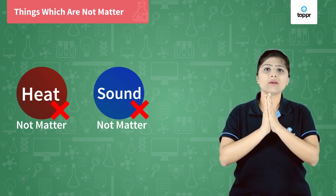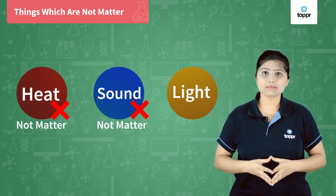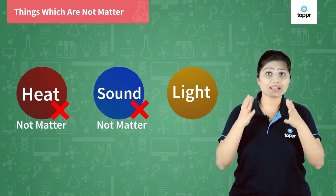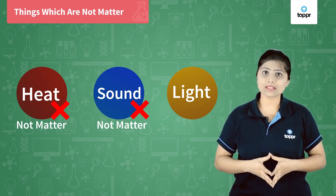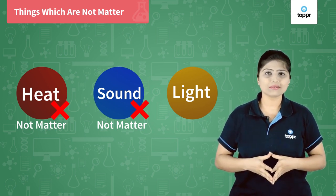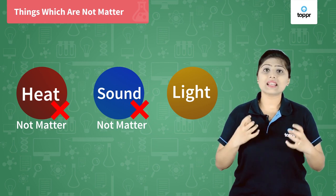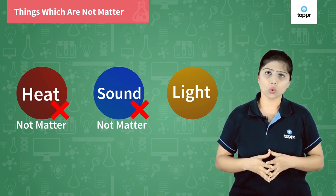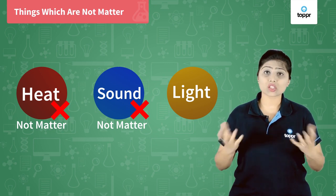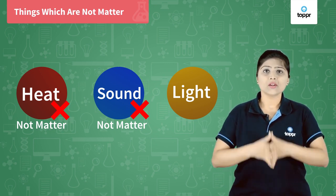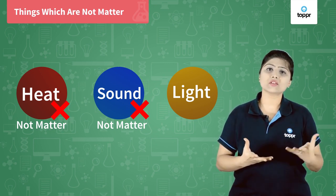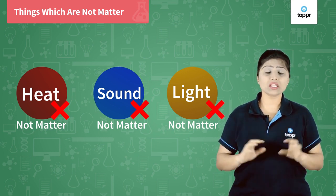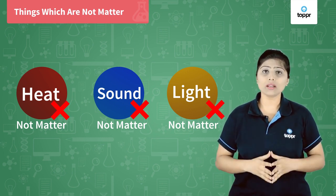What about light energy? The light falls on you. Does it ask you to move so that it can fall? Does it occupy some space? No. Is light having some mass in it? No, light does not have mass. So, light energy is not called matter. Any form of energy is not called matter.